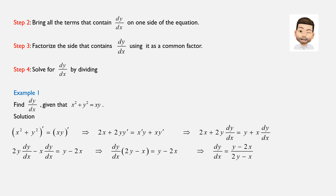The first step is to differentiate both sides with respect to x. Therefore, the derivative of x squared plus y squared equals the derivative of xy. This gives us 2x plus 2y times dy over dx equals y plus x times dy over dx.